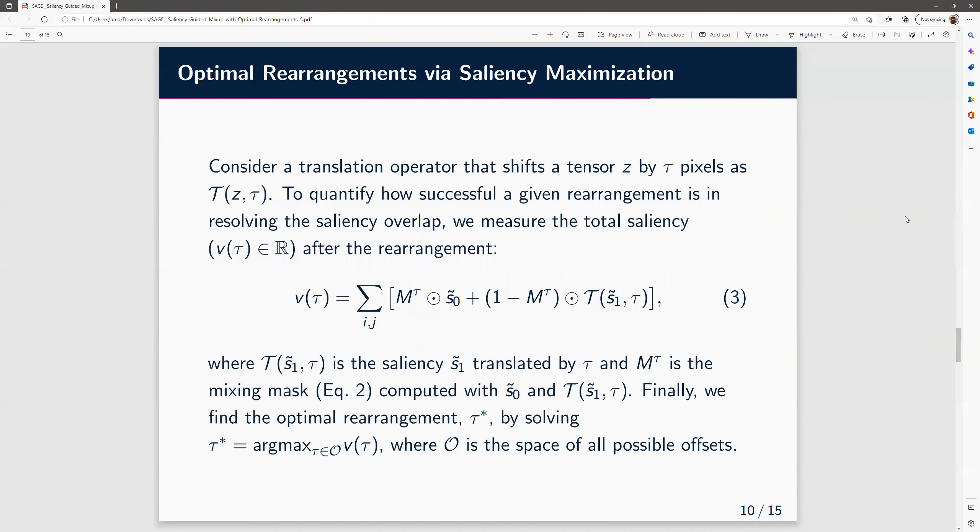Let's consider a translation operator that shifts a tensor z by tau pixels as T(z, tau). To measure how successful a given rearrangement is in resolving the saliency overlap issue, we measure the total saliency after rearrangement and denote it using v(tau). So v(tau) is essentially summing up all the saliency values given the shift parameter tau.